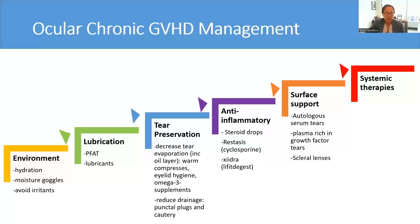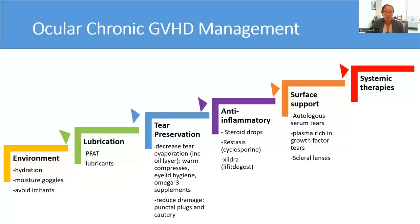Further local therapy to reduce inflammation includes steroid drops, cyclosporine drops, and lifitegrast drops, all to help lubricate the eyes and decrease inflammation. Additional surface support includes autologous serum tears and scleral lenses. Sometimes ocular GVHD does require a more systemic approach with corticosteroids as well as some of the newer therapies, which we'll review briefly later.